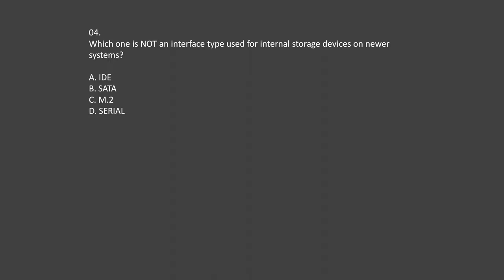Question number 4. Which one is not an interface type used for internal storage devices on newer systems? Option A: IDE. Option B: SATA. Option C: M.2. Option D: Serial.